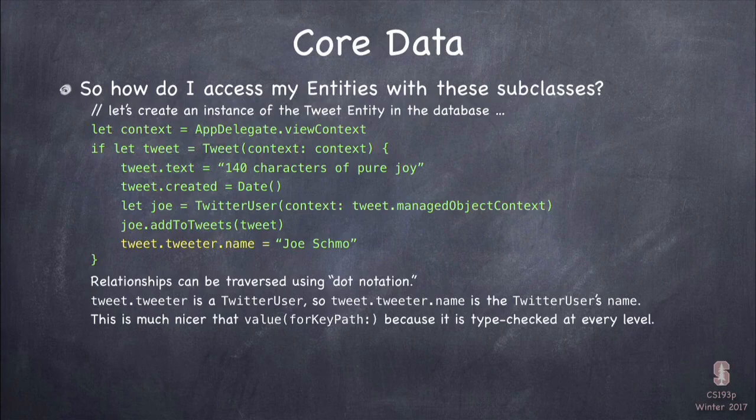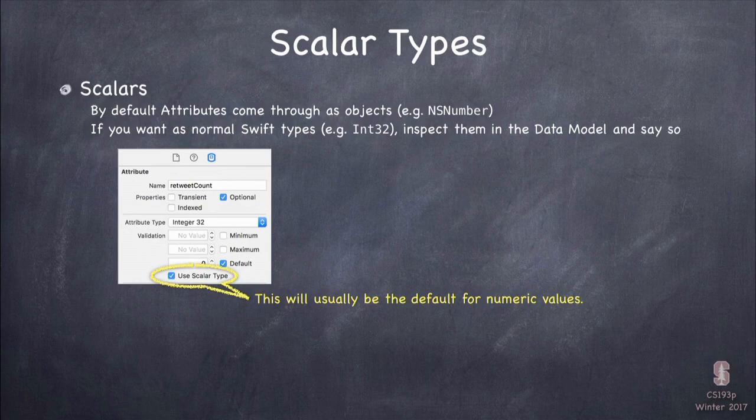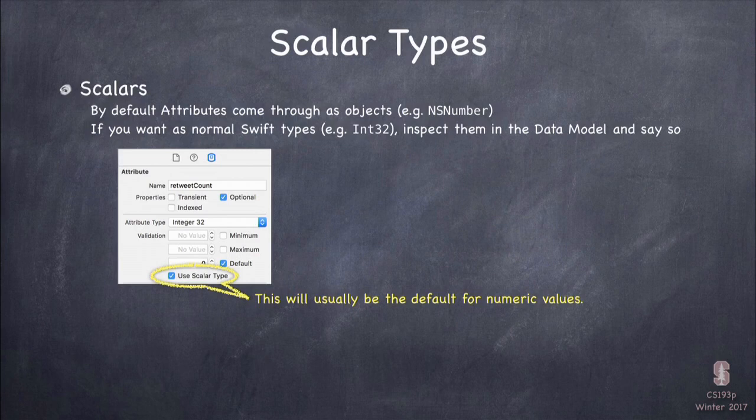Remember scalar types: if you have an integer attribute like retweetCount, by default it's stored as NSNumber. But if you flip the 'Use Scalar Type' switch in the inspector, the var will be of type Int32 instead. You almost always want this for numbers — it's on by default, so you don't need to think about it much.